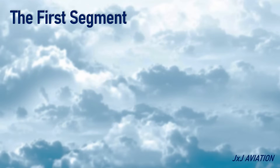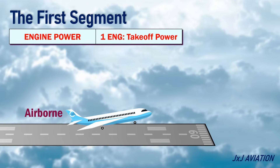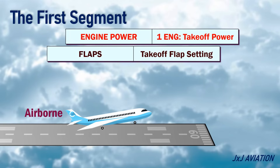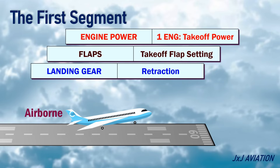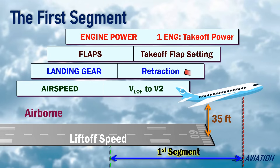The first segment. This segment starts when the aircraft becomes airborne. The operating engine is at takeoff power and flaps are in the takeoff flap setting. In this segment, the landing gear is retracted when the aircraft is airborne with positive climb. The speed at which the aircraft becomes airborne is called VLOF, or liftoff speed. The speed must accelerate to V2 by a height of 35 feet. This segment ends when the landing gear is fully retracted.